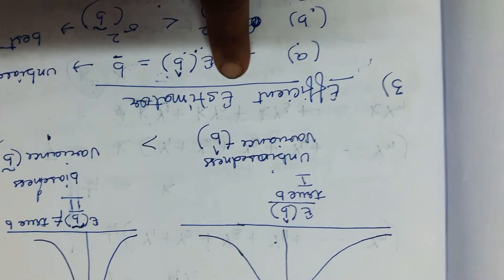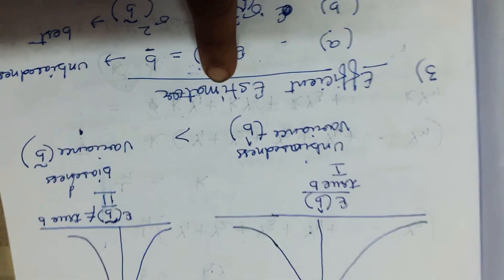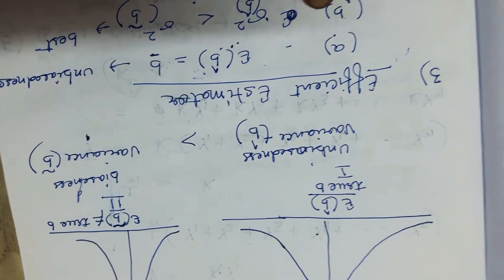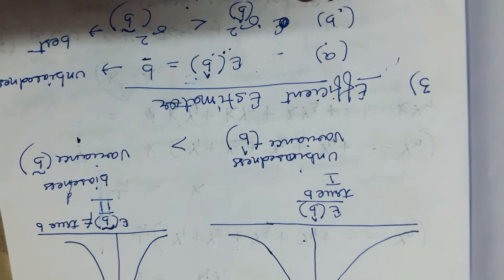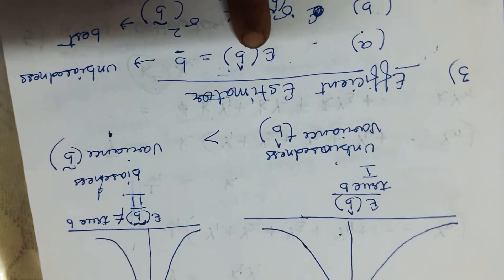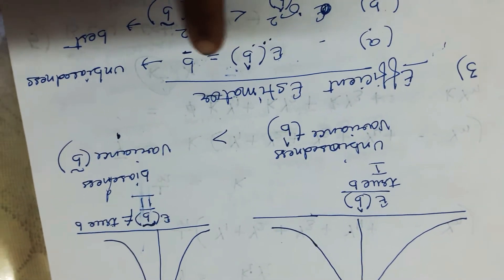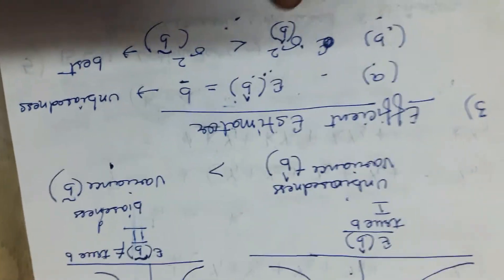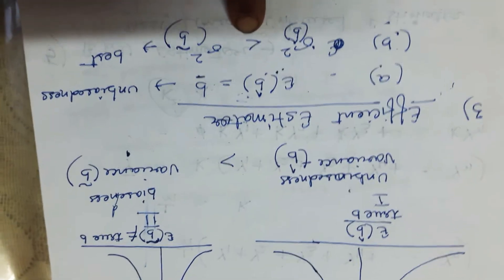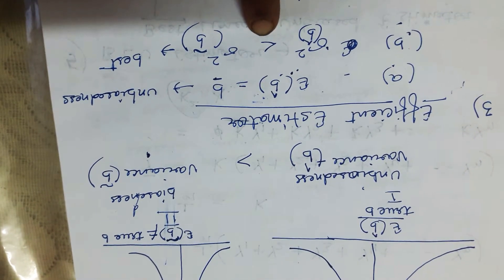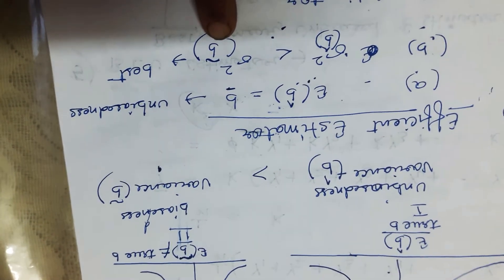The next property is the efficient estimator. An estimator is called efficient when it possesses both the property of unbiasedness and the property of being best. This means the estimated value of b equals the actual value of b, and the variance of b-hat is the minimum — least among all methods of calculation.